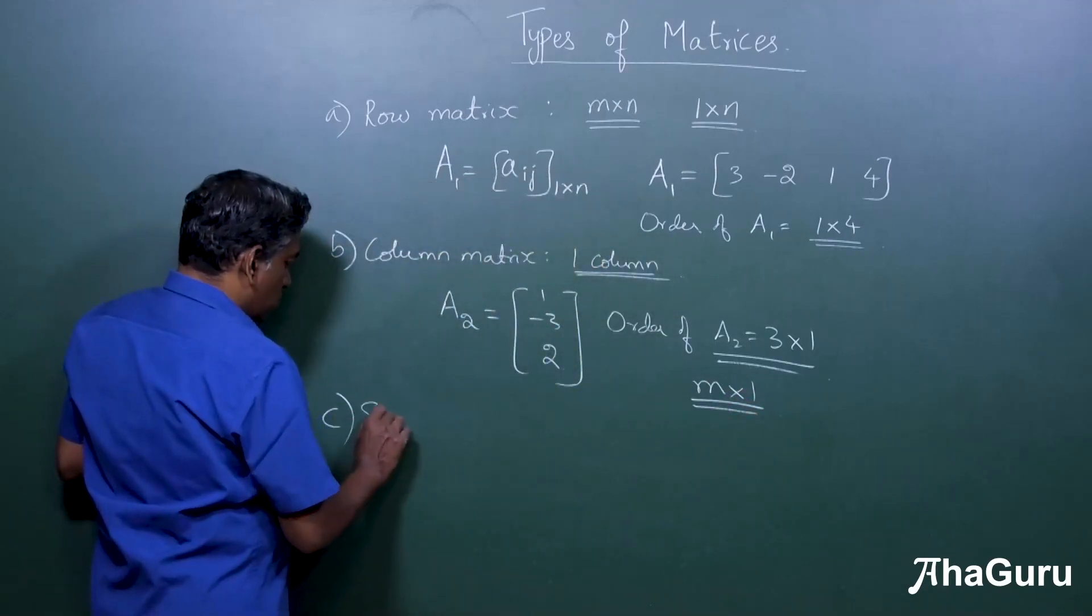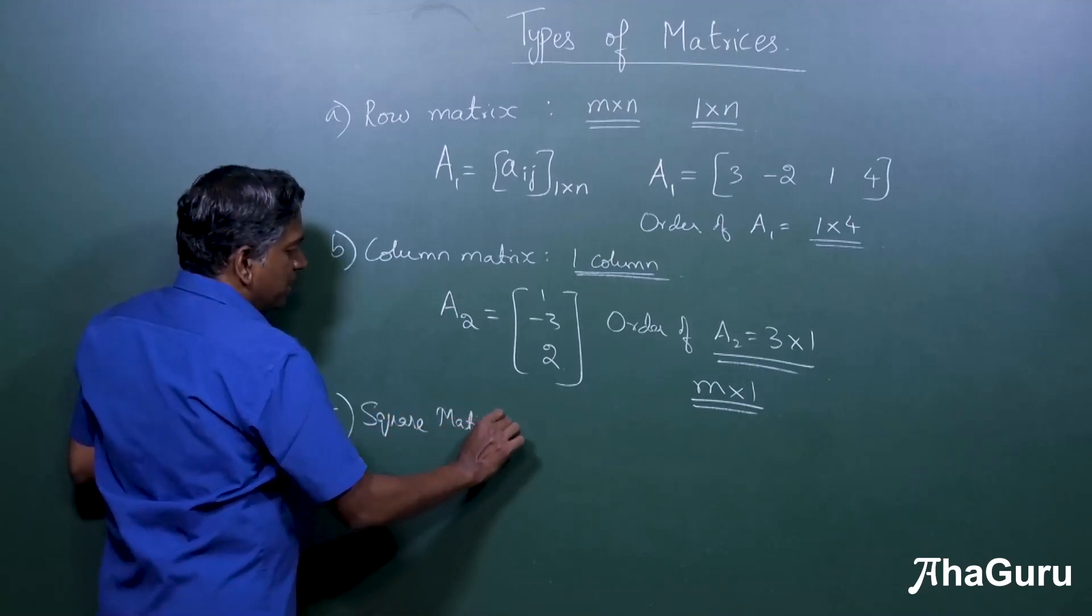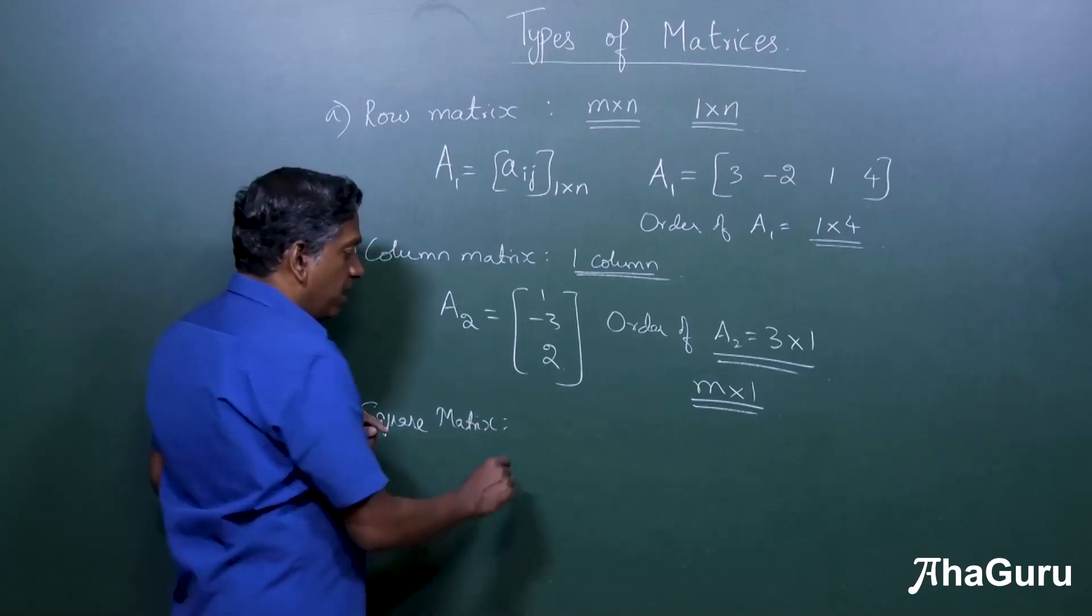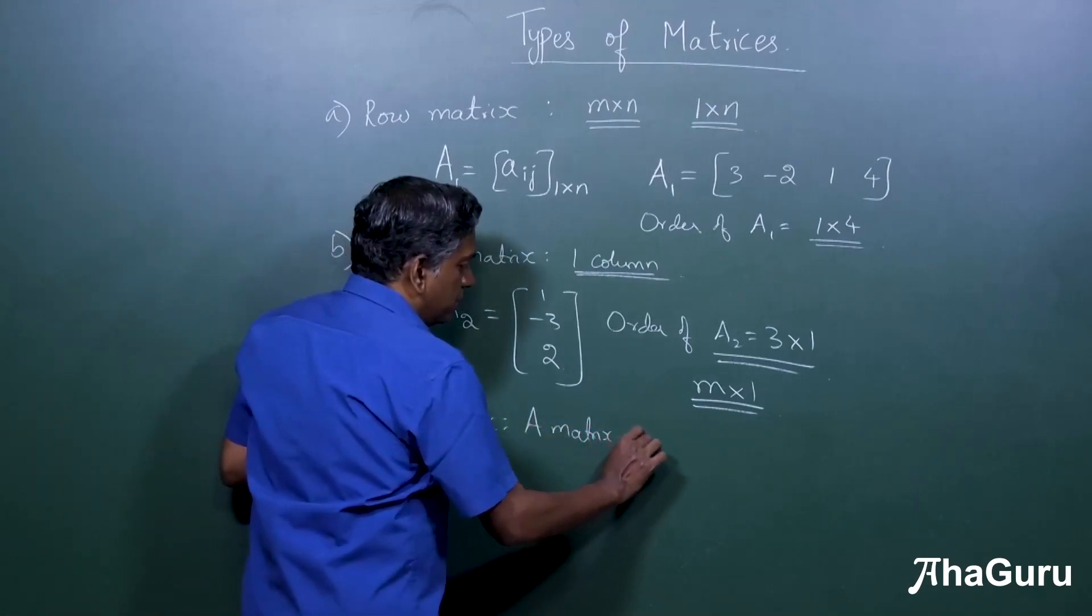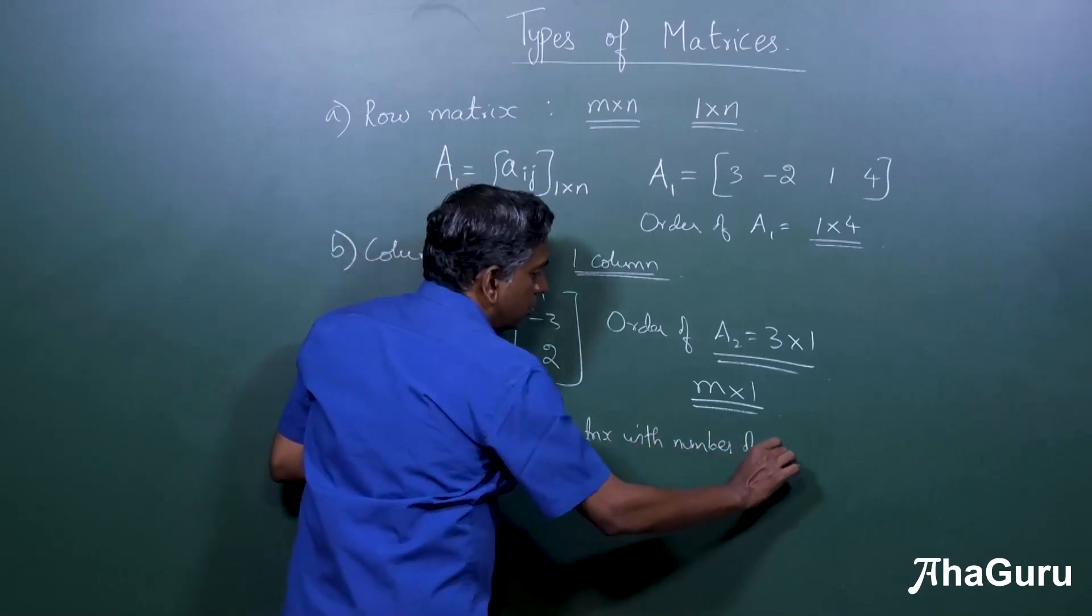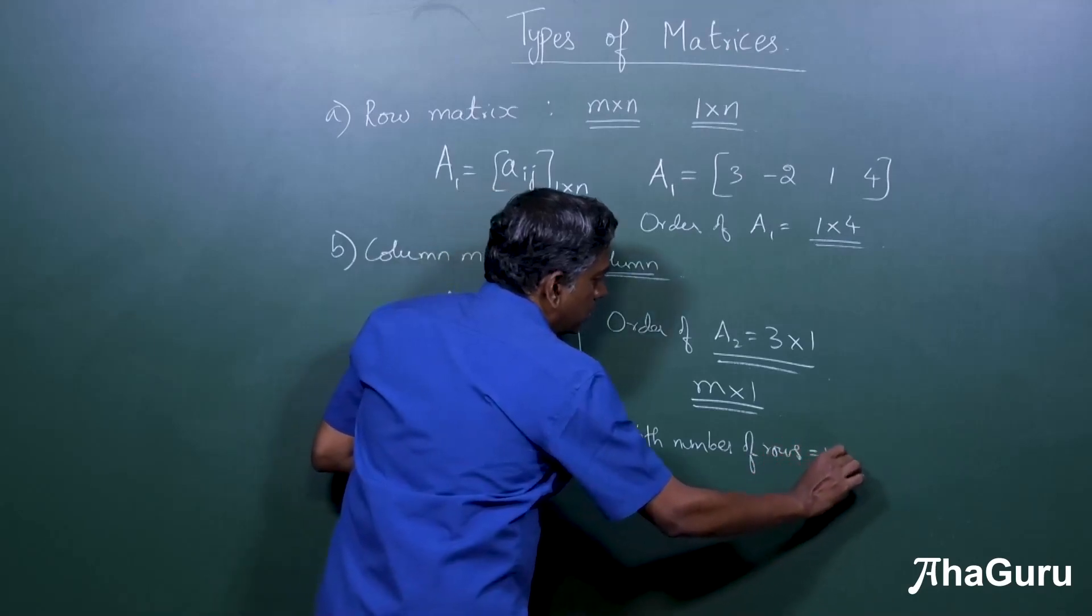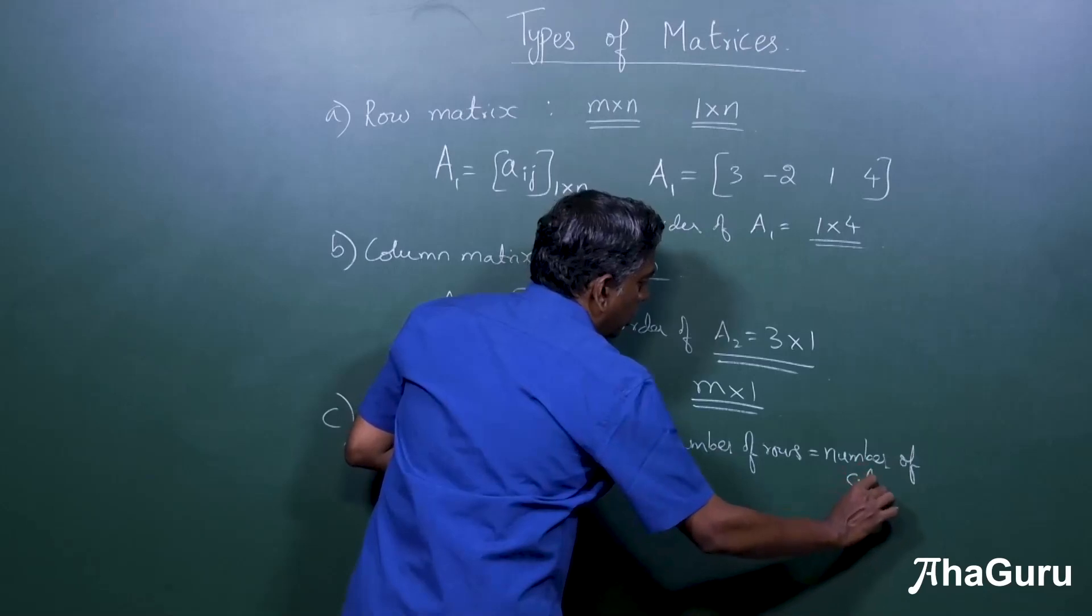Next is a square matrix. This is a very important type of matrix which we will come up with again and again. A matrix with number of rows equals the number of columns.